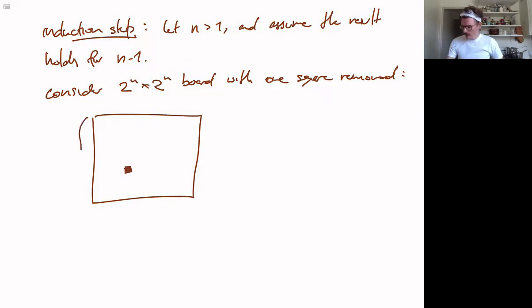Okay, so this board is 2 to the n by 2 to the n, right? So we know that we can do things for 2 to the n minus 1 by 2 to the n minus 1 boards. So let's think if we know a way to reduce the situation to that situation.